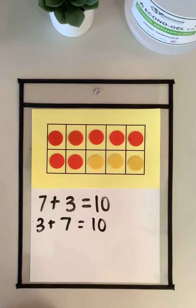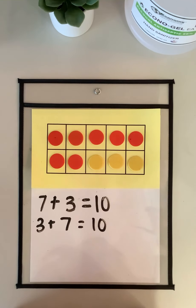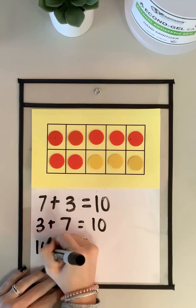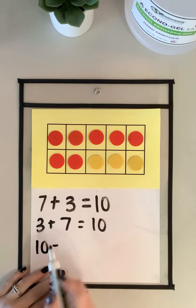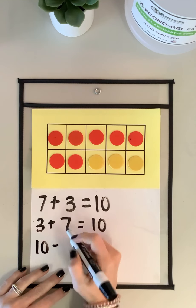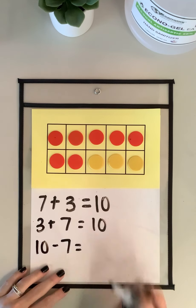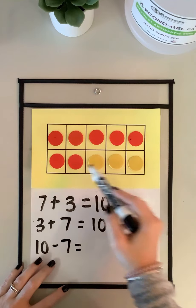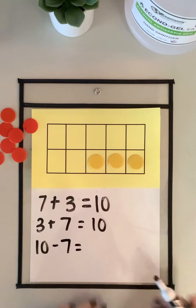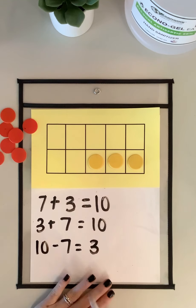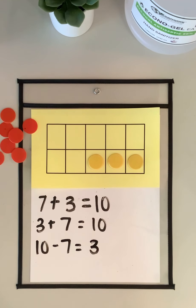The cool thing is we can use fact families for addition, but we can also use them in subtraction too. I'm gonna start with my big number and take away one of the one-digit numbers — I'll do 7 first. If I have 10 and I'm taking away 7, I'm left with 3. See how I use the same three numbers?